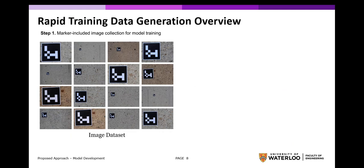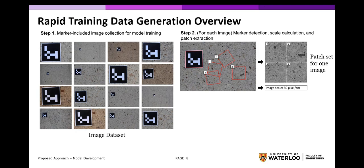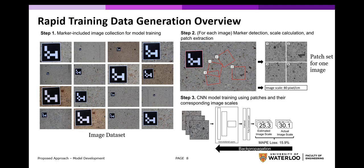The image scale estimator is a convolutional neural network trained on labeled data. The labeled data can be generated as follows. In step 1, we take pictures of scenes of the surface texture with a marker of a known size included in the scene, collecting data at varying distances and at different locations of the structure. Afterwards, in step 2, the marker is detected automatically using an automatic marker detection algorithm and the image scale is calculated accordingly. Multiple patches of the surface texture are then randomly extracted from each image to form a patch set. After extracting patches and determining the image scale for all images, we use them to train the CNN.